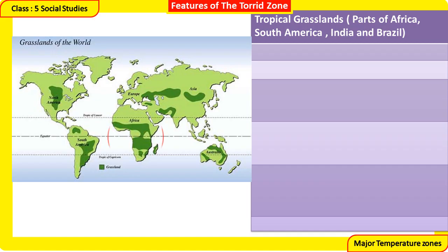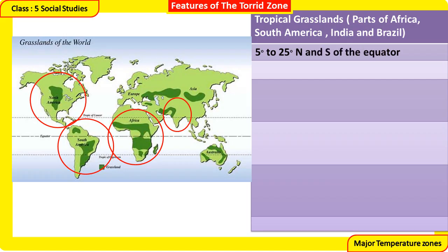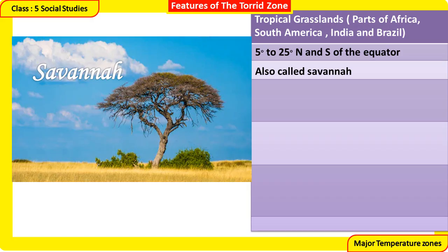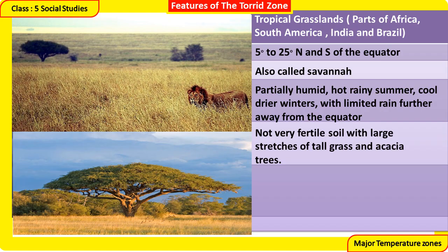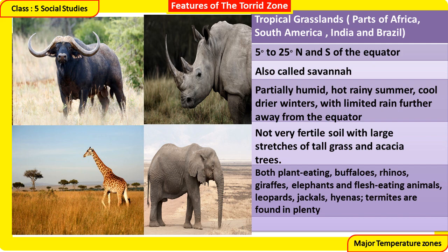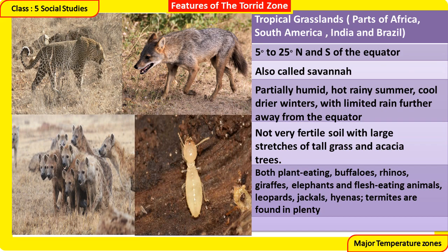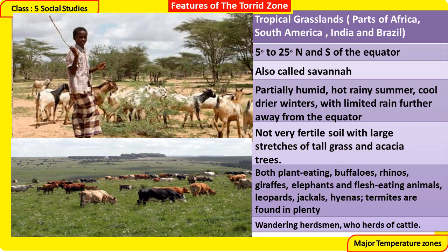Tropical Grasslands — also called Savannah — are found in parts of Africa, South America, India, and Brazil, between 5 and 25 degrees north and south of the Equator. The climate is partially humid, with hot rainy summers and cool drier winters, with limited rain further from the Equator. The soil is not very fertile, with large stretches of tall grass and acacia trees. Both plant-eating animals — buffaloes, rhinos, giraffes, elephants — and flesh-eating animals — leopards, jackals, hyenas — along with termites are found in plenty. The people are mainly wandering herdsmen with herds of cattle.